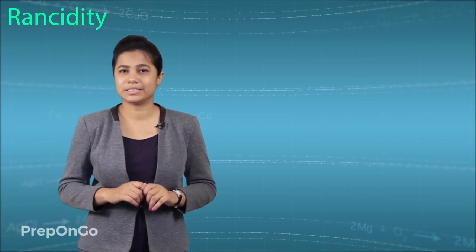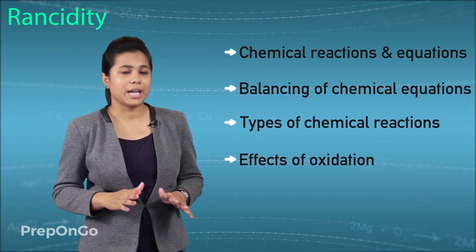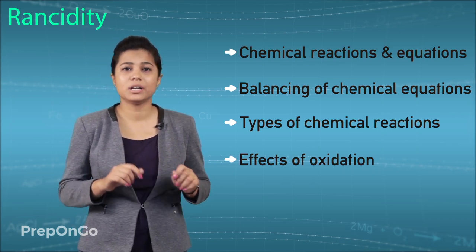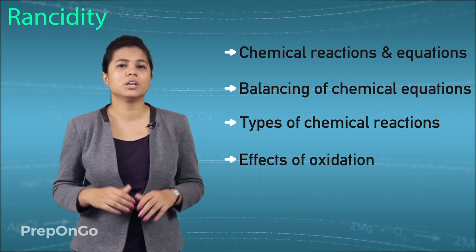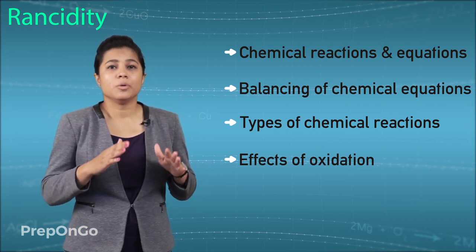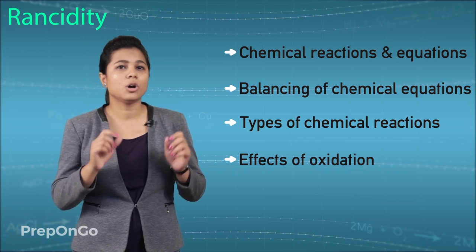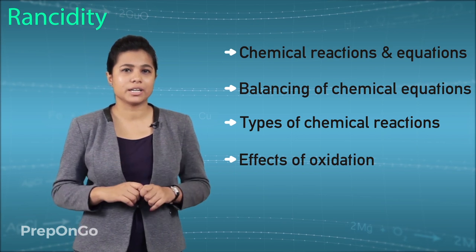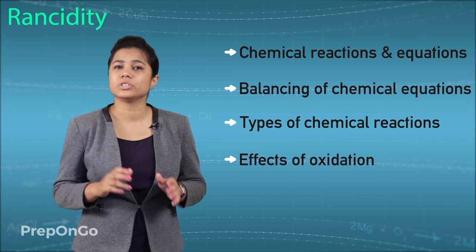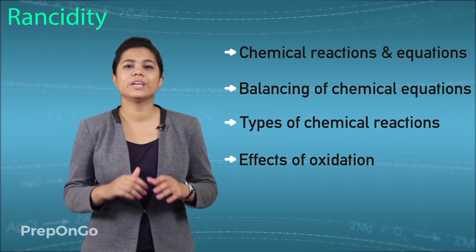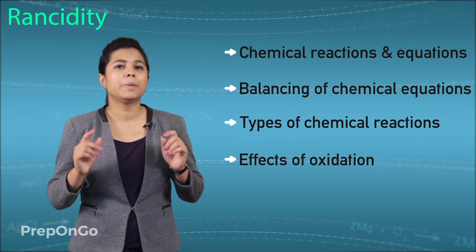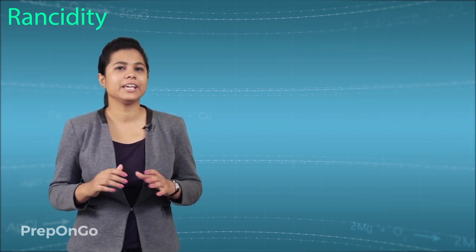We have seen in this chapter what chemical reactions are and how we can write these chemical reactions in the form of equations. We have also learned how to balance these equations. At last, we have seen the oxidation and reduction reaction and also the effects of oxidation, which are corrosion and rancidity. We have learned all the concepts in this chapter — do check your understanding by taking up our test.